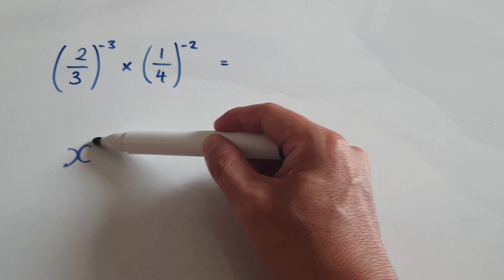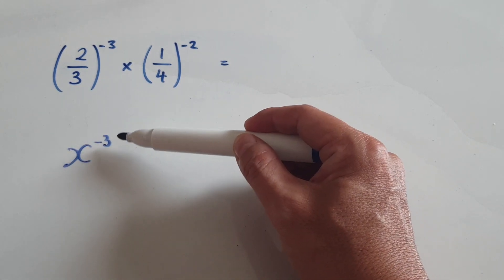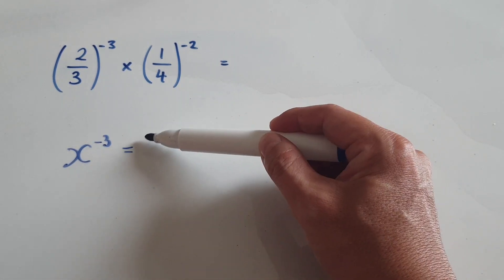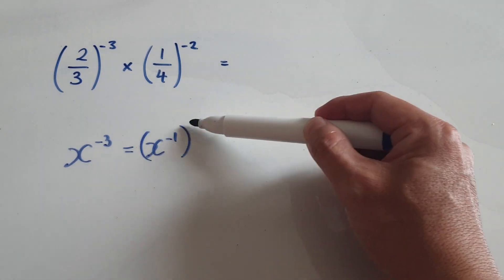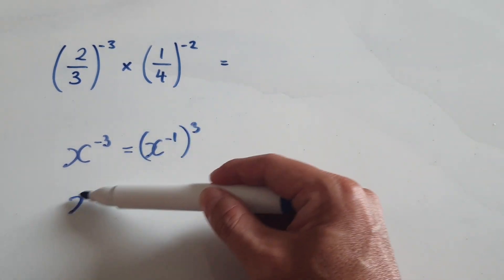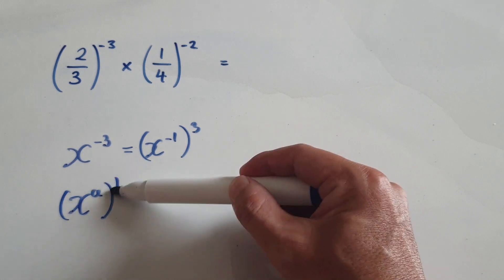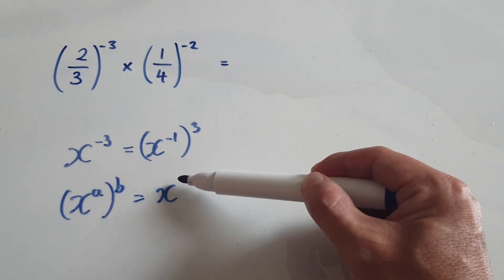So for example, if you have x to the power of negative 3, that is the same as x to the power of negative 1 to the power of positive 3. Because x to the power of a to the power of b, that equals x to the power of ab.